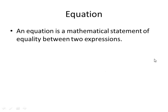An equation is a mathematical statement of equality between two expressions. Something like 3x plus 5 is equivalent to, or is equal to, or is the same as, 2x minus 7. That's an equation. We're saying that the expression on the left-hand side, 3x plus 5, is equal to the expression on the right-hand side, 2x minus 7.